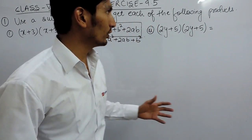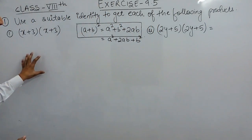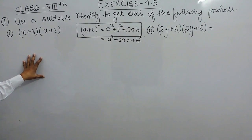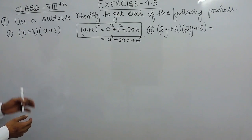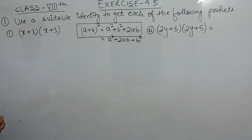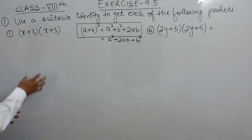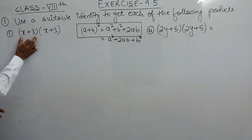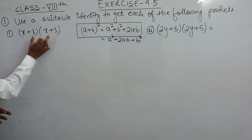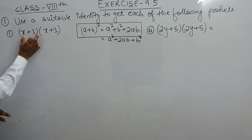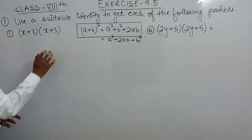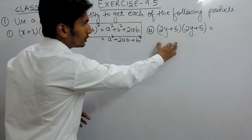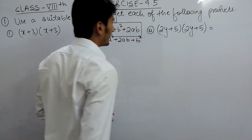Hello everyone. In this video we are going to solve the first question of exercise 9.5, covering the first two parts. We have to use a suitable identity to get each of the following products. For the first term and second term, you have to find their product — meaning you have to multiply them and find the result using a suitable identity.